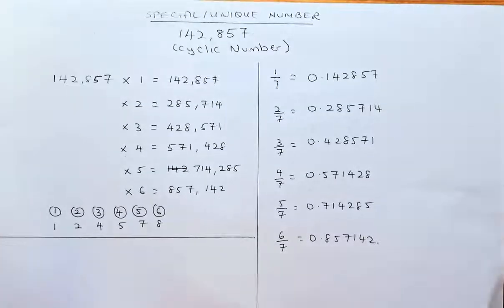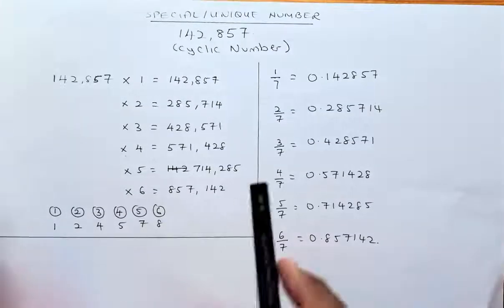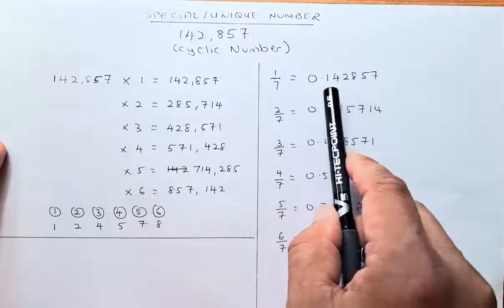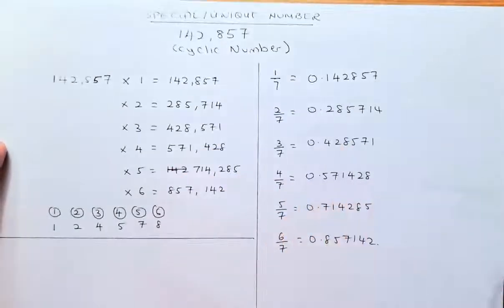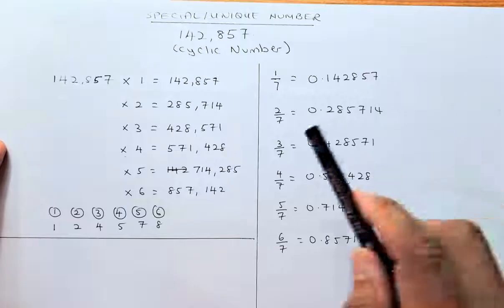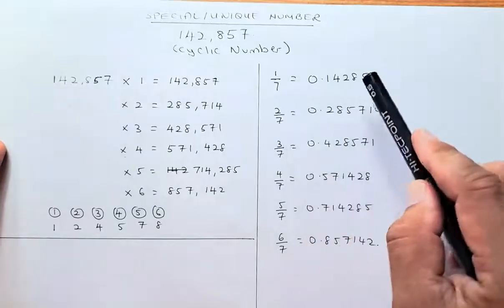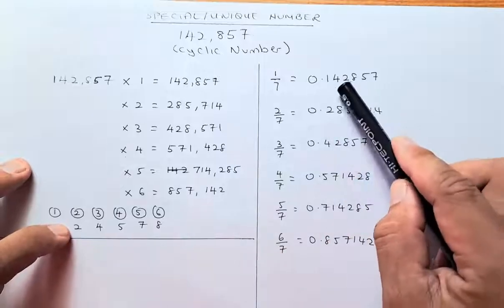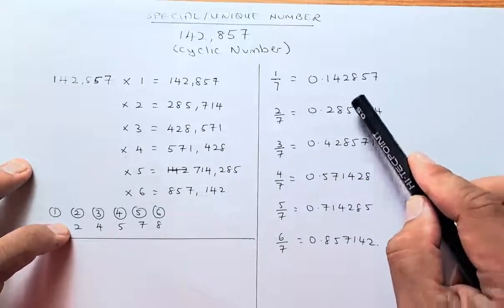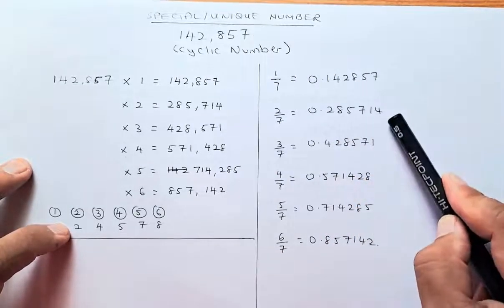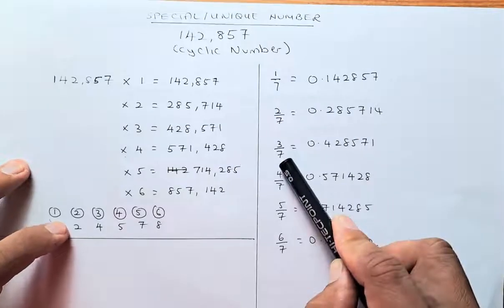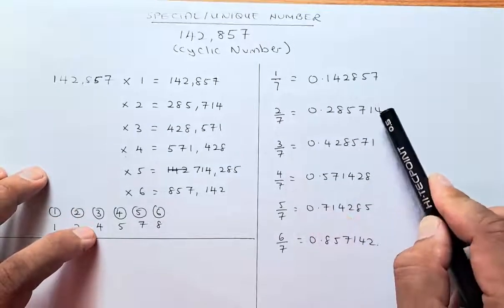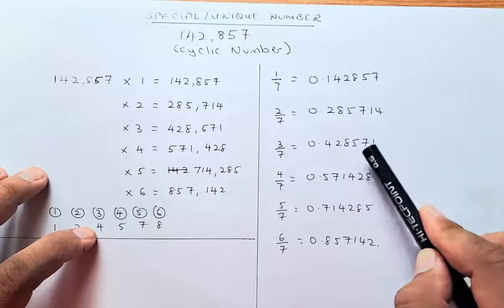This pattern also occurs in fractions of 7. If you take 1/7, the answer is 0.142857. For 2/7, the second digit is 2, so it starts at 2: 0.285714. For 3/7, the third digit is 4, so it starts at 4: 0.428571.